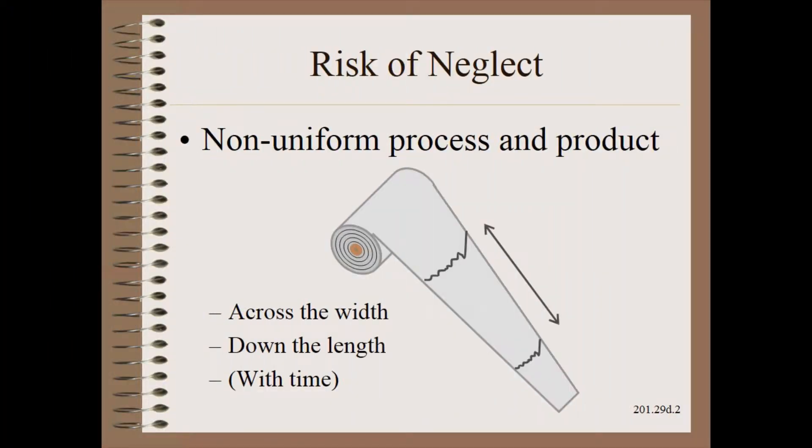The risk of nip neglect is a non-uniform processing product: non-uniform across the width, non-uniform down the length, and non-uniform with time.